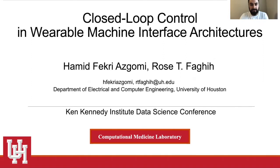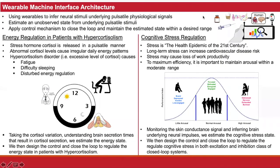My today's presentation is about the closed-loop control in variable machine interface architectures. What we mean by the variable machine interface (WMI) architecture is to use the variables to infer the brain activity, then estimate one hidden state inside the body, and then by designing the control and closing the loop, we try to regulate that estimated state.